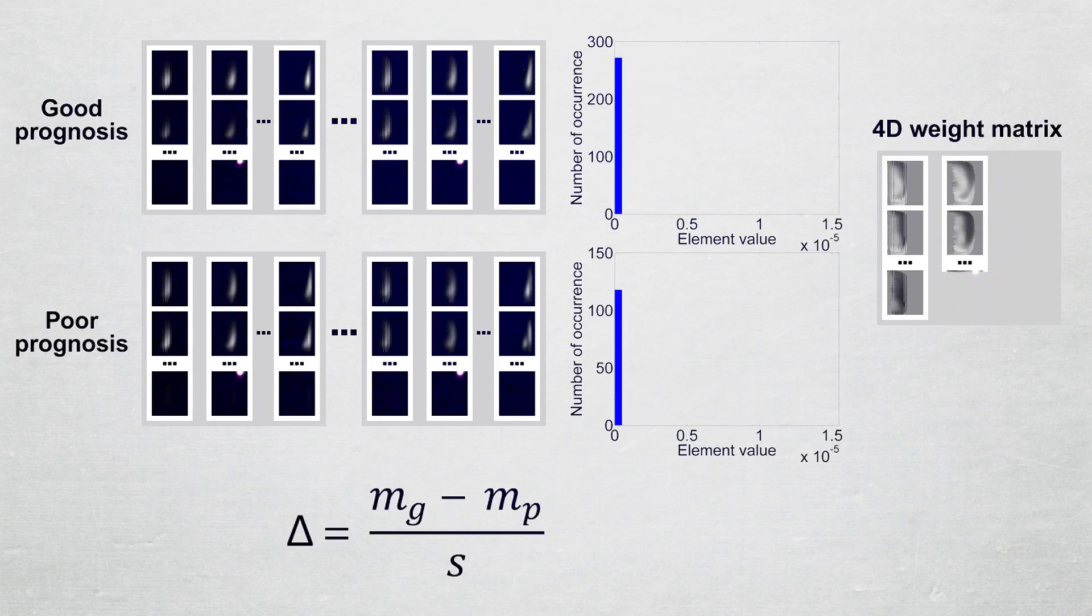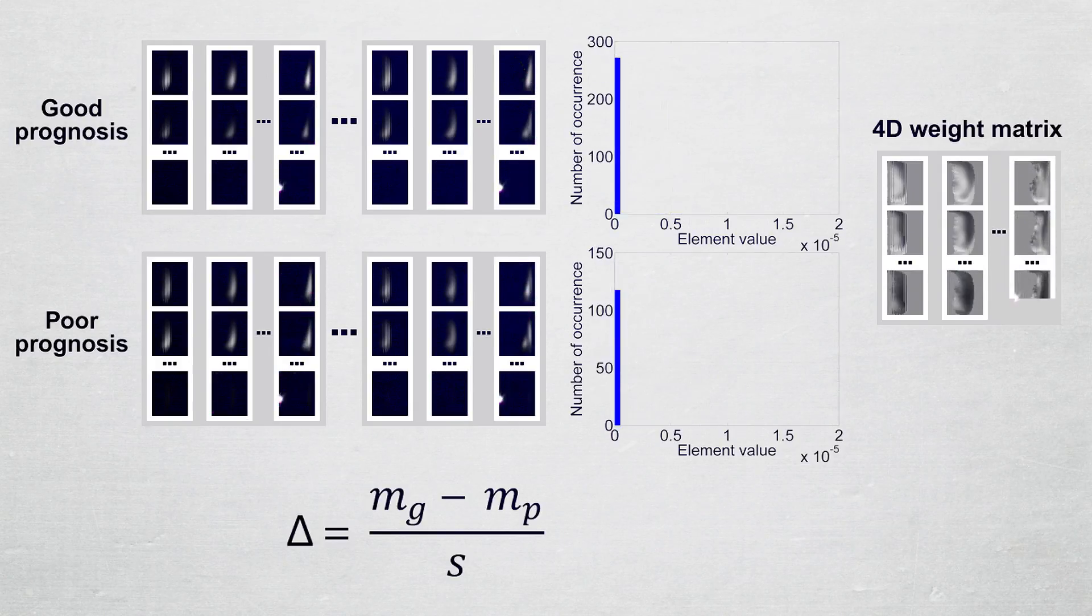This process is iterated over every element of the GLEM4D, resulting in a four-dimensional weight matrix.